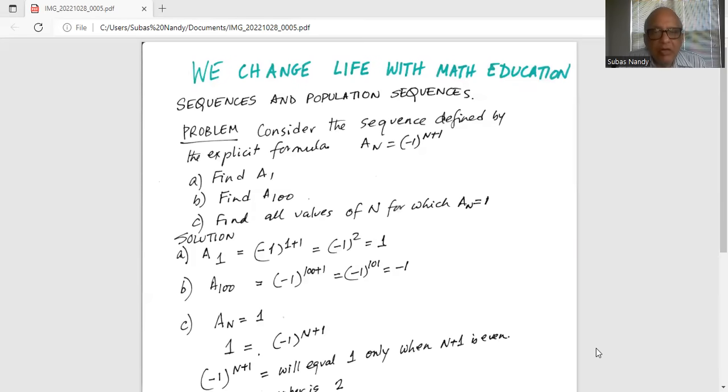So part a, find A₁. A₁ will be (-1) raised to the power of 1 plus 1. So (-1)², the exponent is 2. Minus 1 times minus 1 is 1. So A₁ is 1.